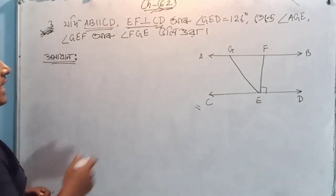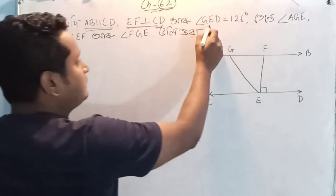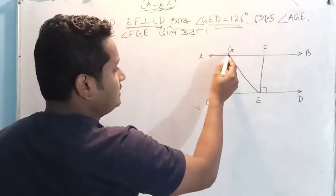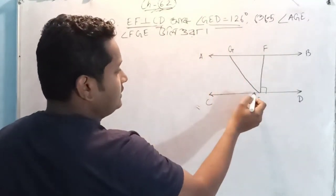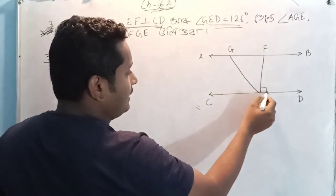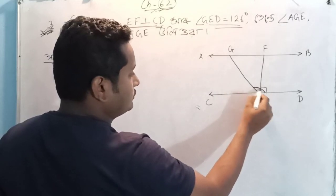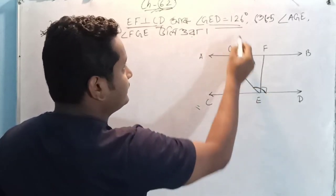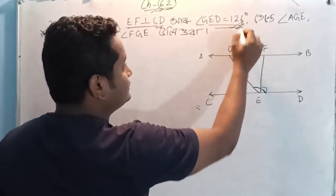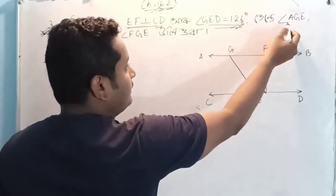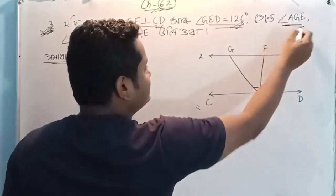So the angle GED is equal to GED. EF is equal to 126. You can see here is AGE.